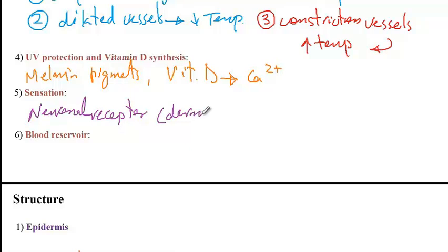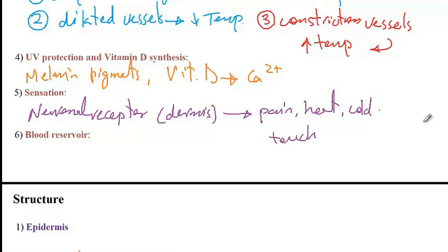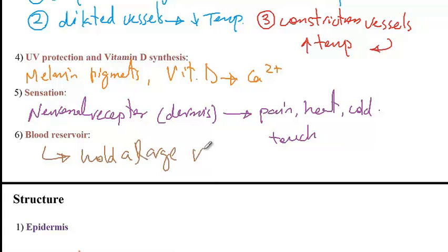Another important function of the skin is sensation. There are neuronal receptors located in the dermis layer that allow different sensations like pain, heat, cold, touch, and vibration. The final function of the skin is to act as a blood reservoir — the dermal vascular supply is very extensive and can hold a large volume of blood. During vigorous exercise, these cutaneous blood vessels constrict to allow shunting of blood back to the muscles.